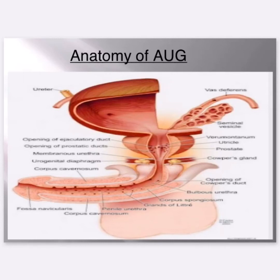Anatomy of AUG: uretovas deferens, seminal vesicle, verumontanum, opening of ejaculatory duct, urethral opening of prostatic ducts, prostate, membranous urethra, Cowper's gland, urogenital diaphragm, corpus cavernosum, opening of Cowper's duct, valvus urethra, corpus spongiosum, navicular fossa, fossa navicularis, penile urethra with corpus cavernosum.